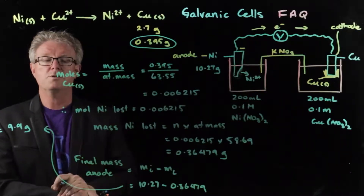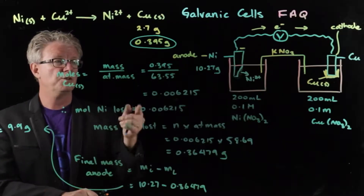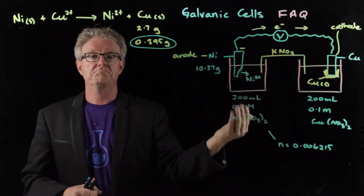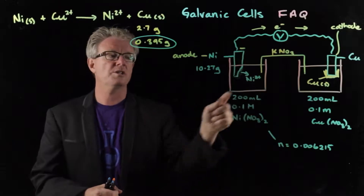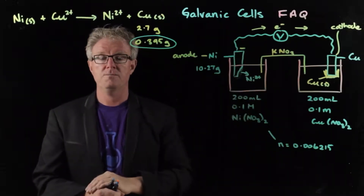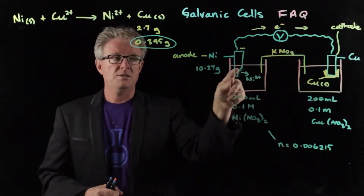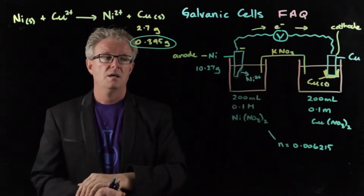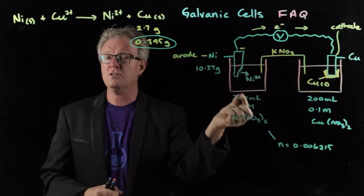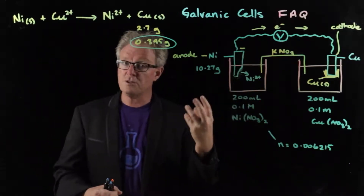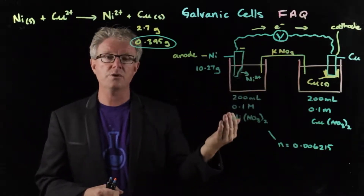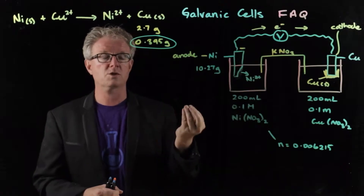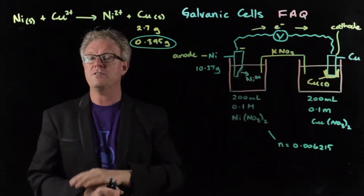That's step one — double-check you understand that, and here's another question related to this galvanic cell. A common question when you're given concentration and volume measurements is: what is the concentration of the nickel nitrate solution once the cell has been turned off? We've just determined the mass changes of the electrodes. The nickel electrode is losing nickel ions into solution, so the concentration of nickel is going to go up. From an observational standpoint, the color intensifies — nickel is green, so the intensity of the green coloring in that half cell increases.